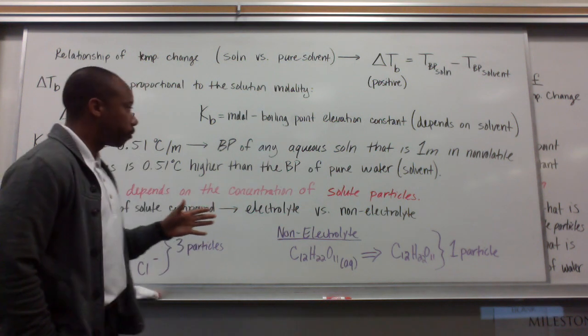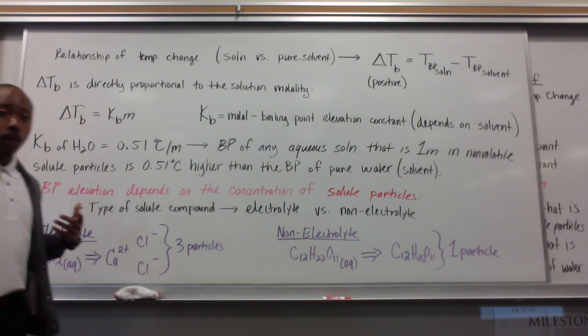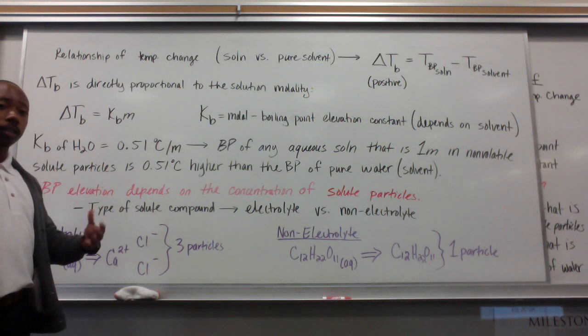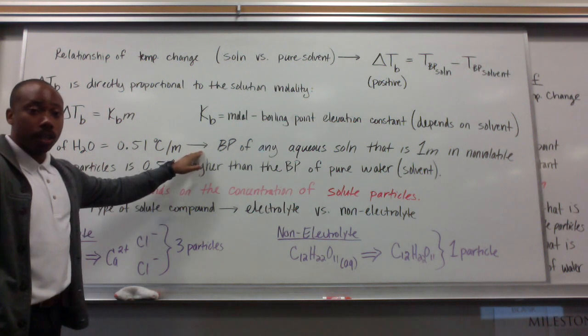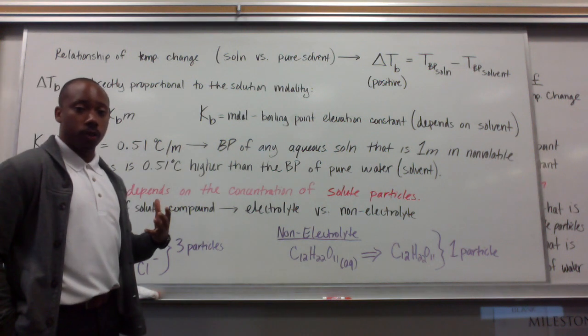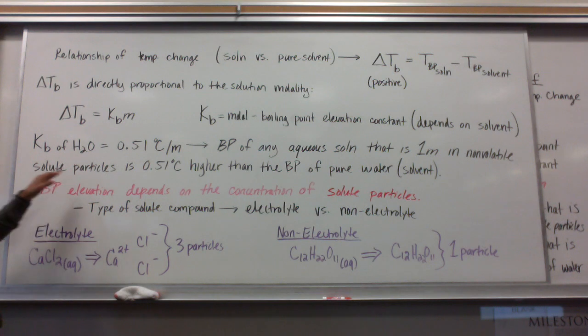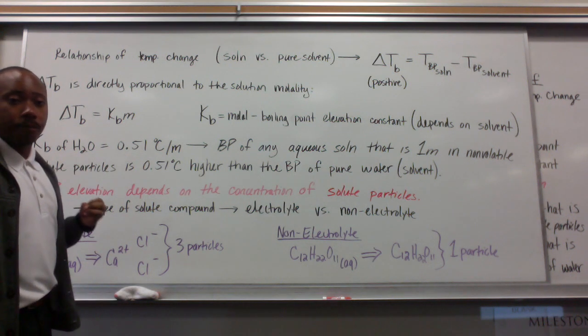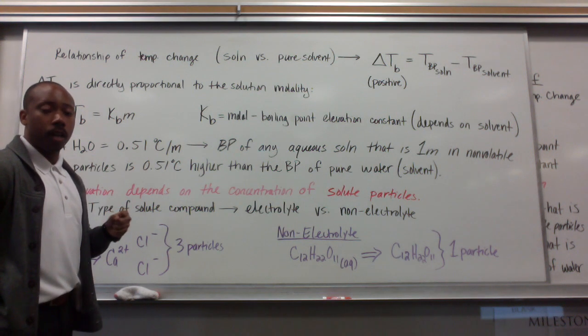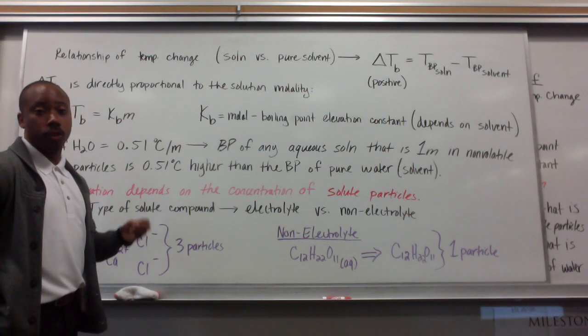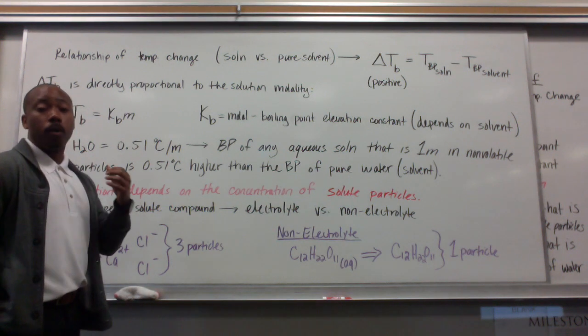Now the K sub B of H2O of water is 0.51 degrees Celsius per molal. What this means is that the boiling point of any aqueous solution that is 1 molal in non-volatile solute particles is 0.51 degrees Celsius higher than the boiling point of pure water, which is your solvent.